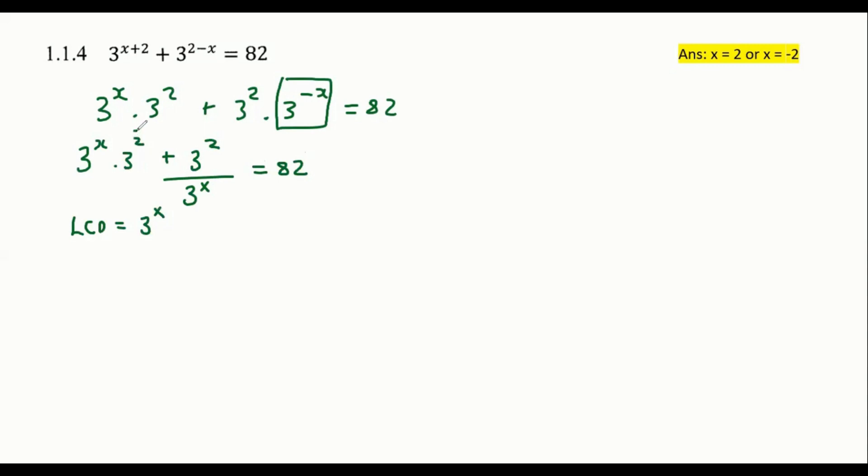But first I'm just going to quickly rewrite this as nine and I'm also going to rewrite this as nine just to make our life a little bit easier. So it's going to be nine times by three to the power of X plus nine over three to the power of X equals 82.